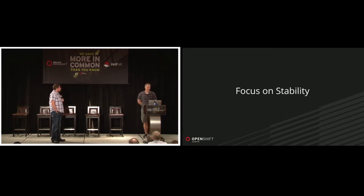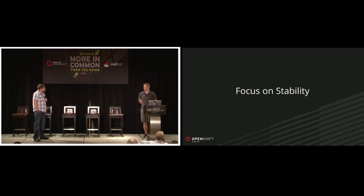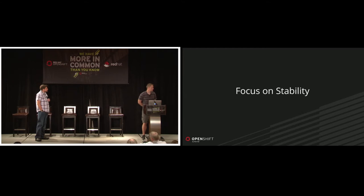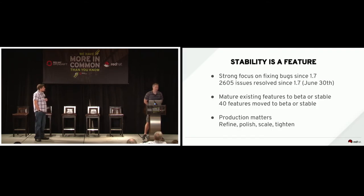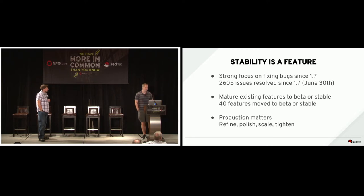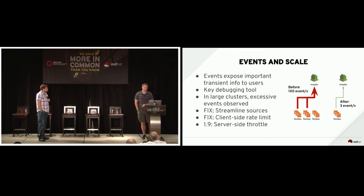Platform stability is probably the most important thing — being a reliable foundation. If you don't have a reliable foundation, there's no point building on top of it. In Kubernetes 1.7, 1.8, and 1.9 there was a very strong focus on fixing bugs and moving features into stable patterns. On the Red Hat side, we were very focused on production: refining, tightening, and polishing the system at scale in some of the most demanding environments in the world.